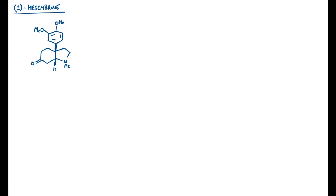Hi everyone. This structure is an alkaloid known as mesembryine, and I thought it might be a good target for a quick retrosynthesis. As ever, we should start by labelling functional groups. We've got a ketone on the left and an amine on the right. I also want to highlight a 6-5 cis ring fusion — that's actually the thermodynamically most stable ring fusion for those ring sizes, so that should keep things nice and simple. In the centre there's a quaternary carbon centre, which is also a stereocentre. That can sometimes be fiddly to set up as it restricts the type of chemistry we can use. And up the top we've got a benzene.